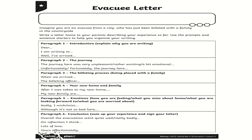Then paragraph four is about going to your new home and your new family — a paragraph to describe what those people are like. Maybe they're very friendly and you think you're going to have a good time with them. Maybe you think they're going to work you really hard because they own a farm and will get you to milk the cows and muck out the horses. Maybe the grown-ups are okay, but there are some children there who don't want to share their things with you, and you can tell that by the way they look at you when you go into the house.